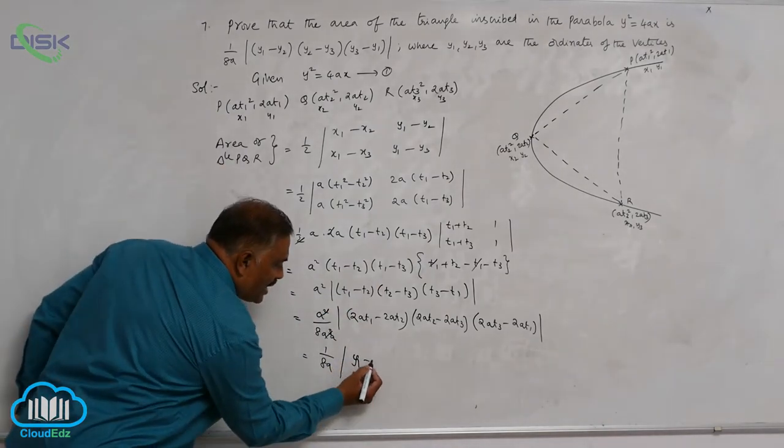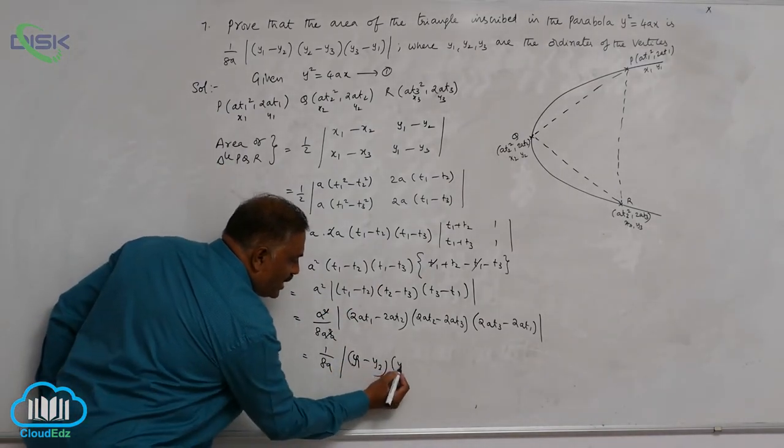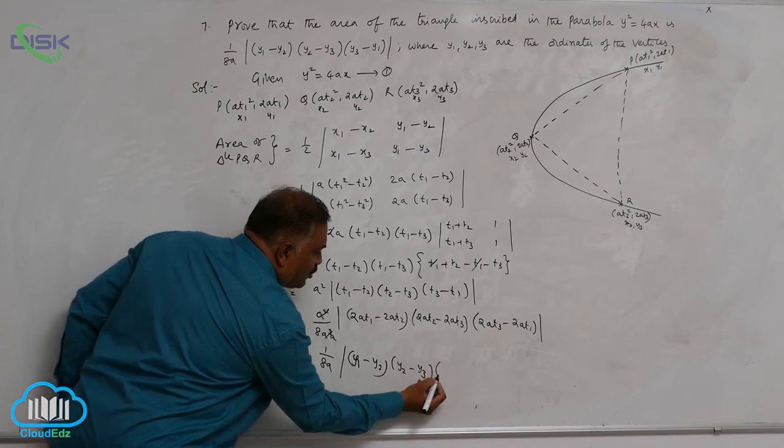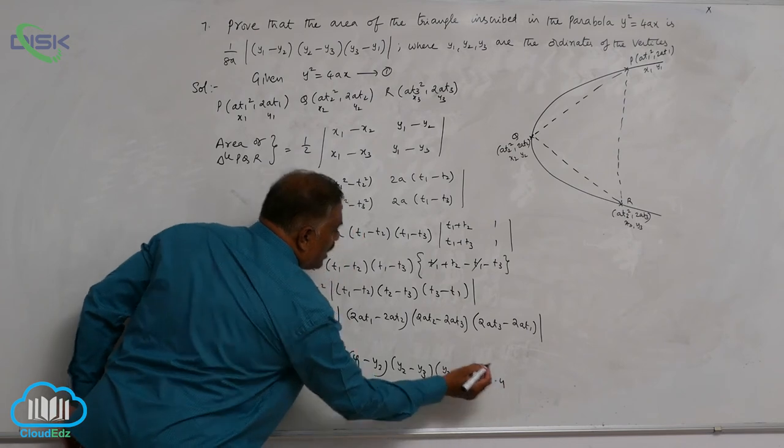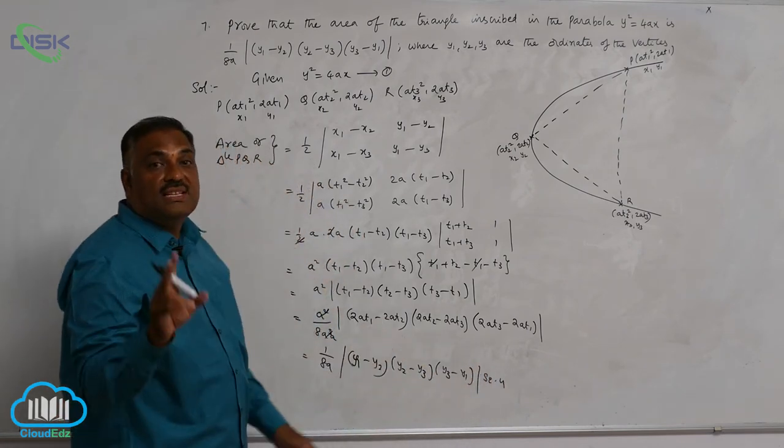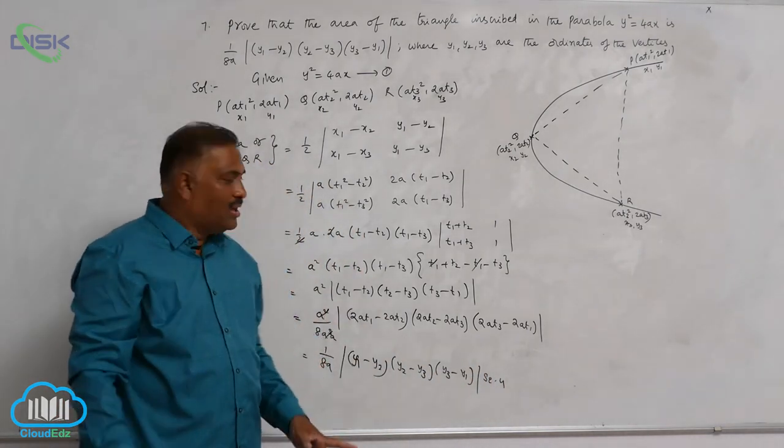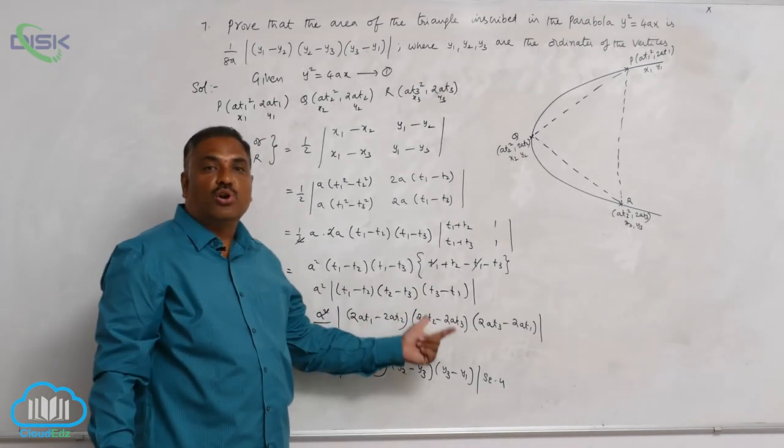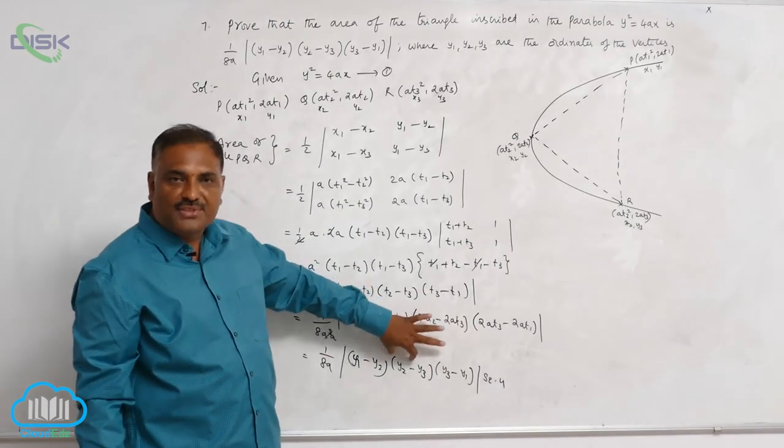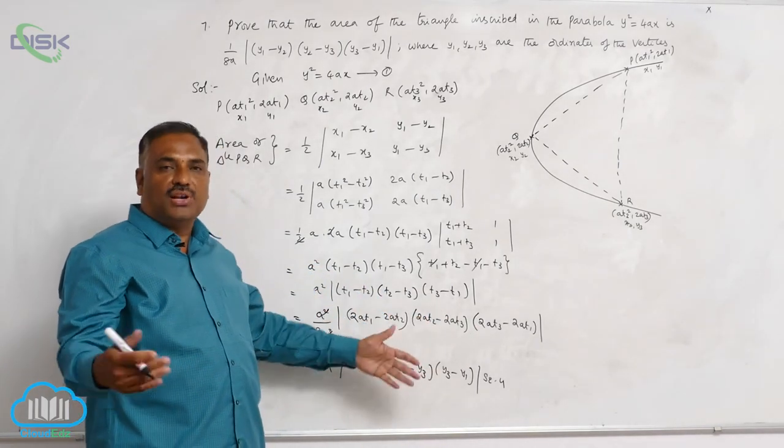Now, this is y₁ minus y₂ into y₂ minus y₃ into y₃ minus y₁ square units. You always remember one point, since area cannot be negative, always it is advised to put the area in modulus, so that inside if negative sign comes also, it makes us positive.